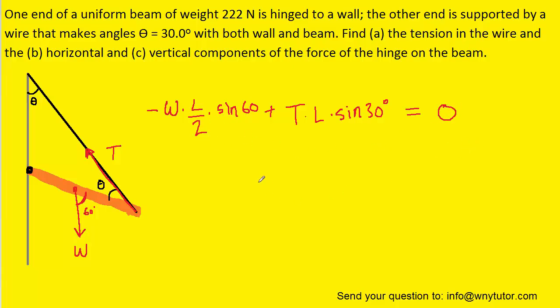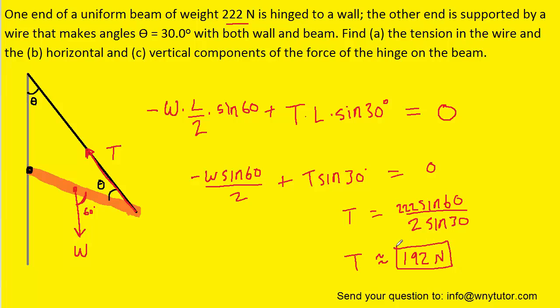We'll notice that l can be divided out of the equation. And then we can solve for t by adding this term over to the right side, and then dividing both sides by sine of 30. We'll then go ahead and plug in the given value for the weight, which was 222 newtons. And when we compute that, we get a tension of approximately 192 newtons. So that is the correct answer to part A.